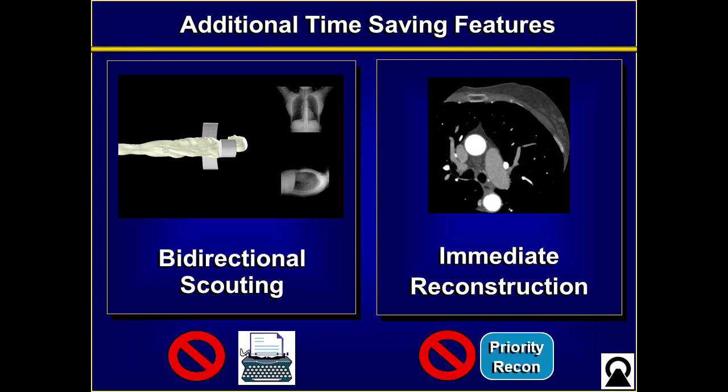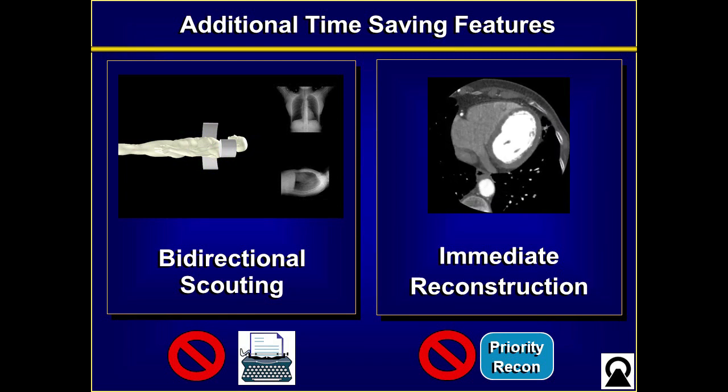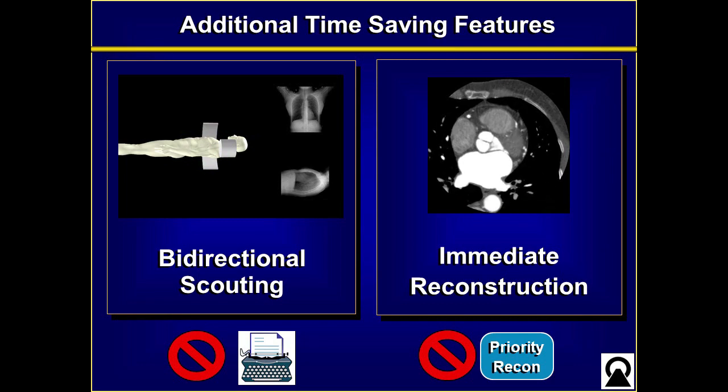Other things also save time. We have immediate reconstruction on our images. It used to be that technologists had to wait after the scan was done for all images to be reconstructed before getting the patient off the table. On our new scanner, fast reconstruction literally keeps up with the scanner, so you don't need to wait or search for the priority recon button. You can see everything the whole way down. Now I'd like to share a number of diagnostic dilemmas that occurred both before and after our upgrade and show you the effects on our workflow.